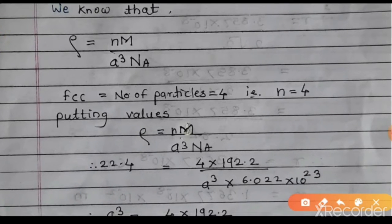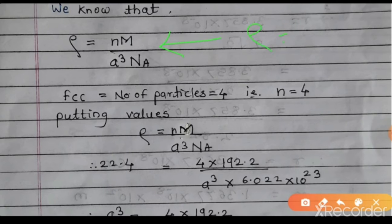Rearranging to solve for a³: a³ = (4 × 192.2) / (22.4 × 6.022 × 10²³). The density value moves to the denominator on the right-hand side.